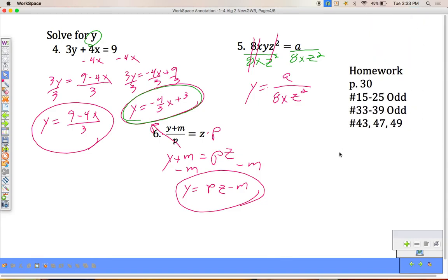Alright, this is your classwork assignment. Page 30. 15 through 25 odd, 33 through 49 odd, 43, 47, 49. After you complete these, check your answers out of the back of the book. Flip to the back and find page 30 and check your answers. All the odds are in the back. That's why you're going to get a lot of these.